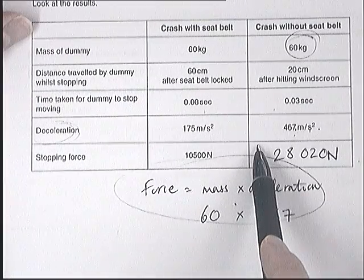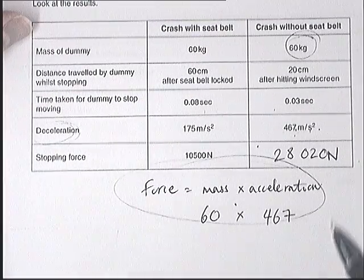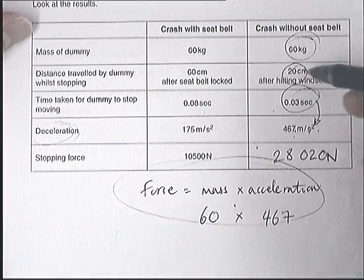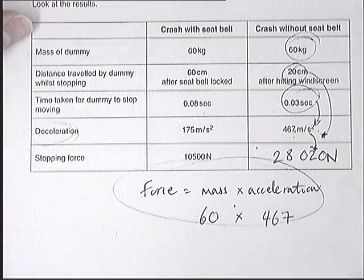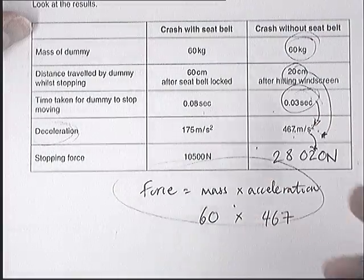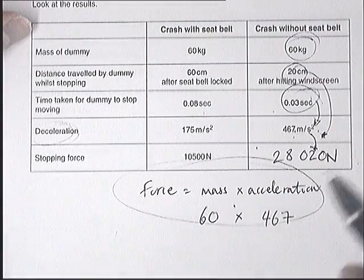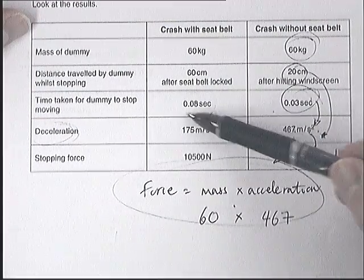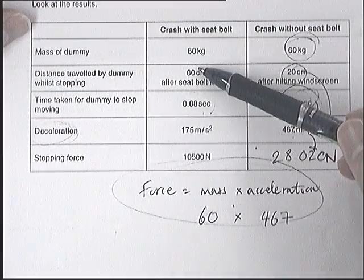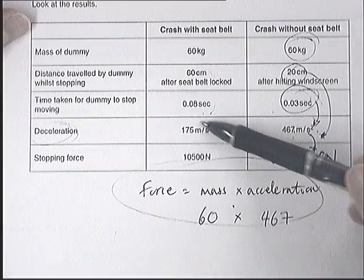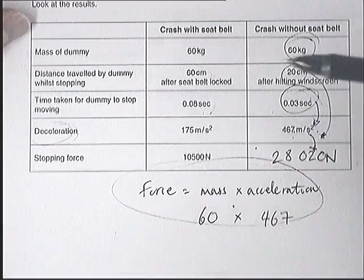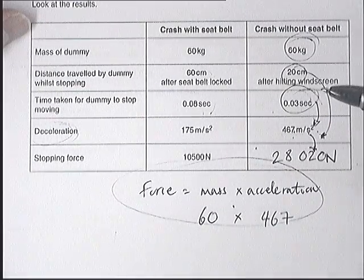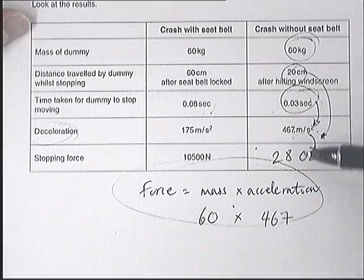I think that's pretty simple. To get the really higher marks, you need to link the stopping time or distance with the deceleration, and then subsequently with the force. Basically, both crash test dummies are changing speed from a high velocity to a low velocity. If that happens over a long time or a long distance, it's going to be a smaller deceleration. So a short stopping time means all that speed comes off very, very rapidly — and that is a very high force.